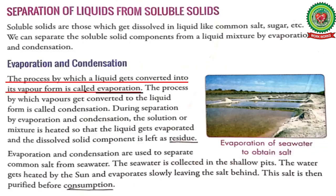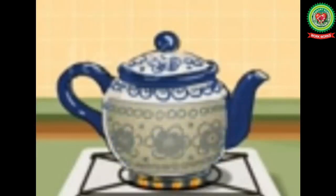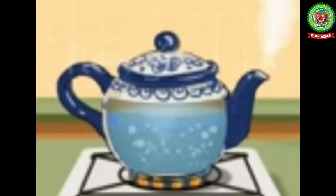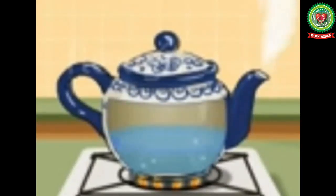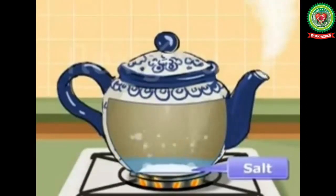The process by which a liquid gets converted into its vapor form — that is, gaseous form — on heating is called evaporation. A common example of evaporation is separating common salt from sea water. During evaporation, the solution or mixture is heated and the liquid component evaporates, leaving the dissolved solid component behind.